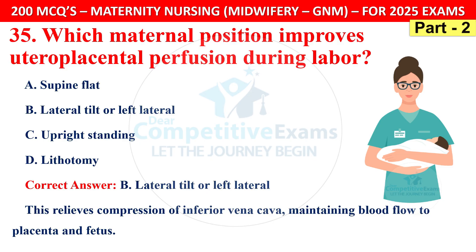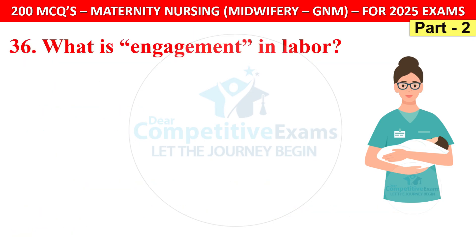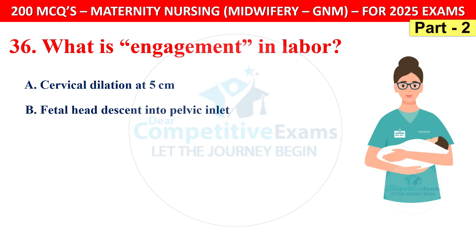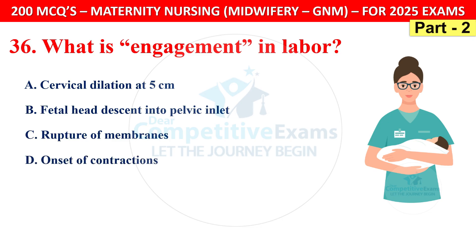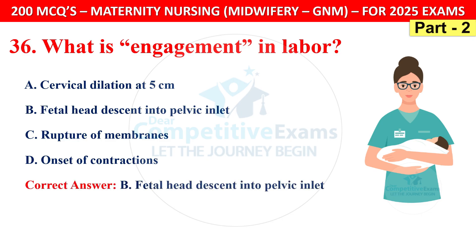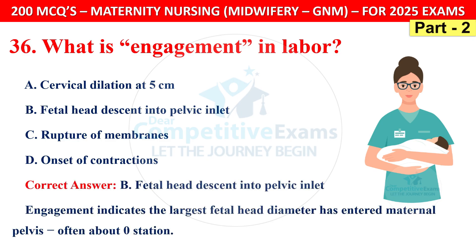Question 36: What is engagement in labour? Options are cervical dilation at 5 cm, fetal head descent into the pelvic inlet, rupture of membranes, or onset of contractions. The correct answer is B — fetal head descent into the pelvic inlet. Engagement indicates the largest fetal head diameter has entered the maternal pelvis, often at zero station.